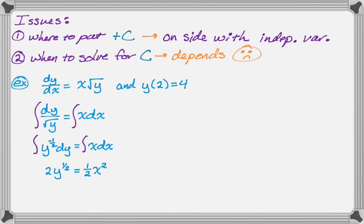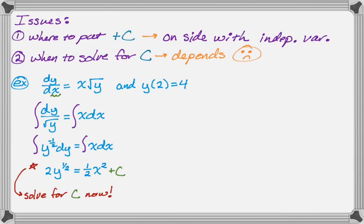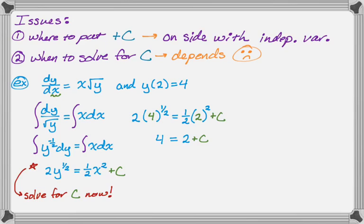Now I need to figure out where to put plus C. I go back to the original dy/dx, look in the denominator of that symbol, see that x is there, so x is the independent variable — plus C goes on that side. I'm going to solve for C right now since it's easy enough. Replacing y with 4 and x with 2: the square root of 4 is 2, so 2 times 2 is 4; 2 squared is 4 and half of that is 2, giving 4 = 2 + C, so C = 2.